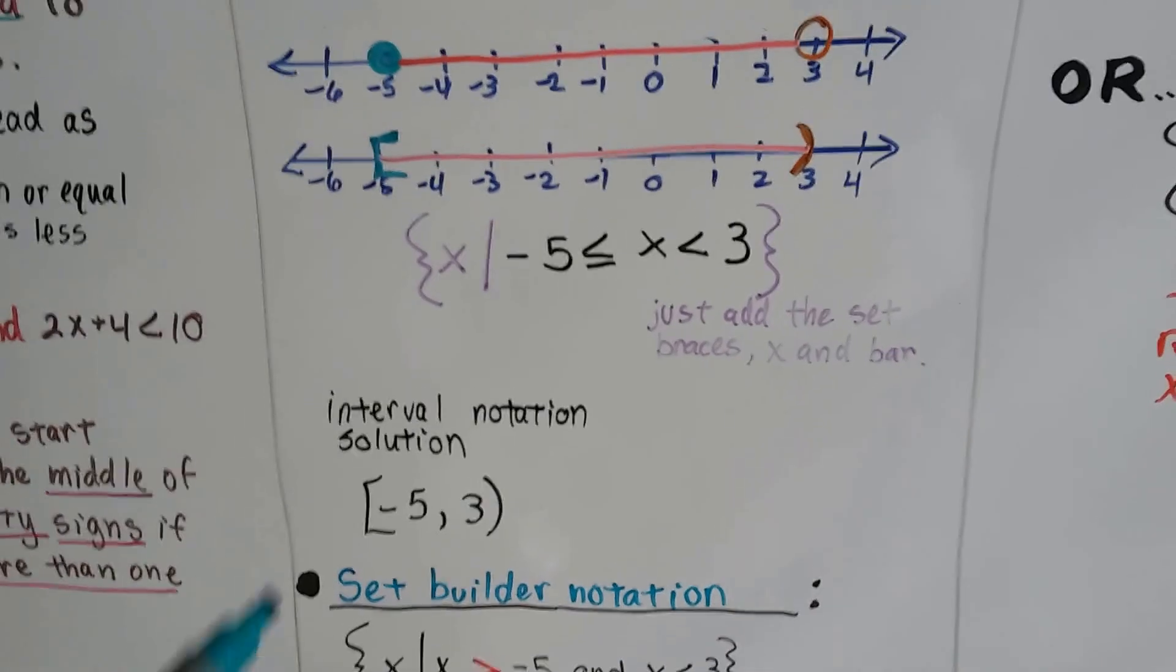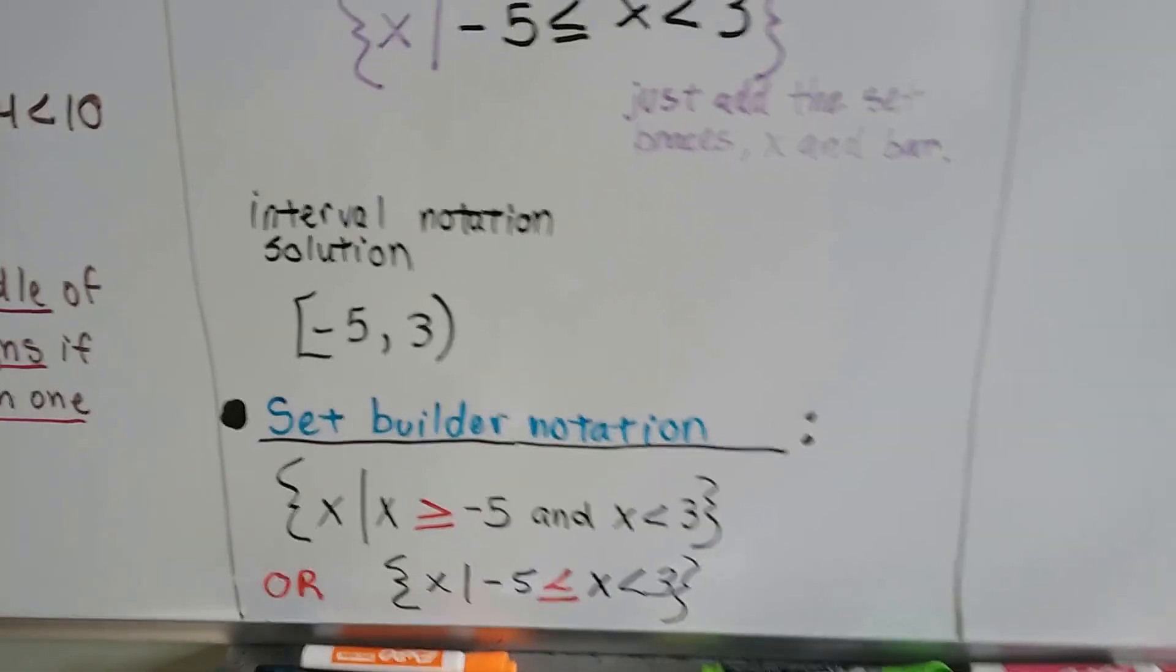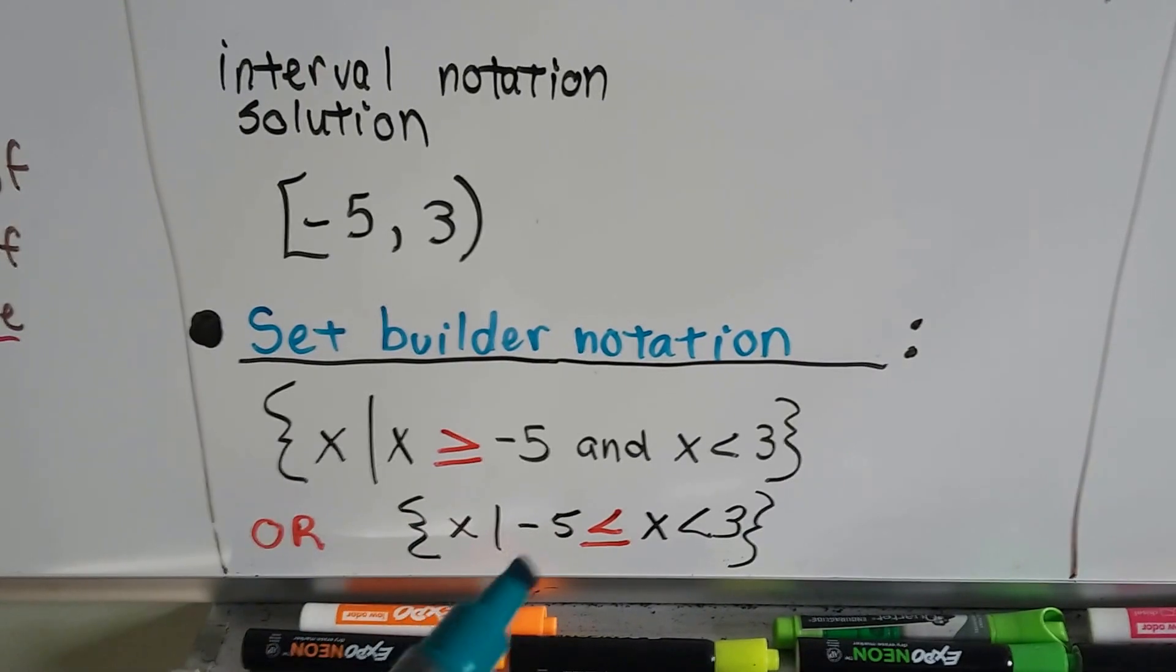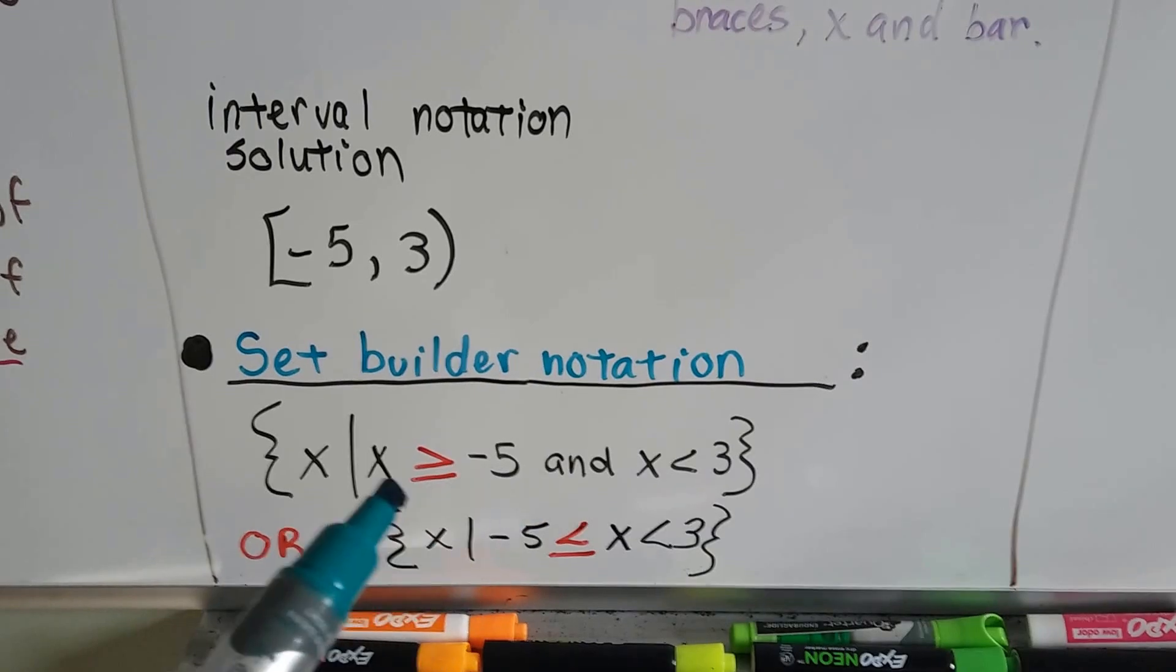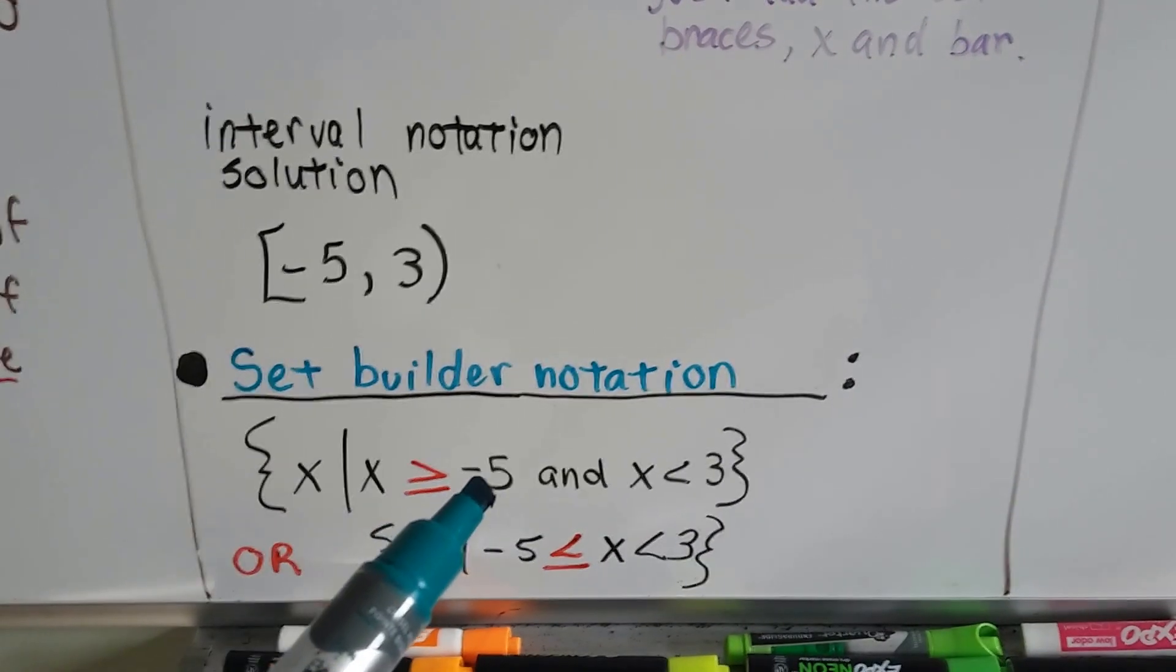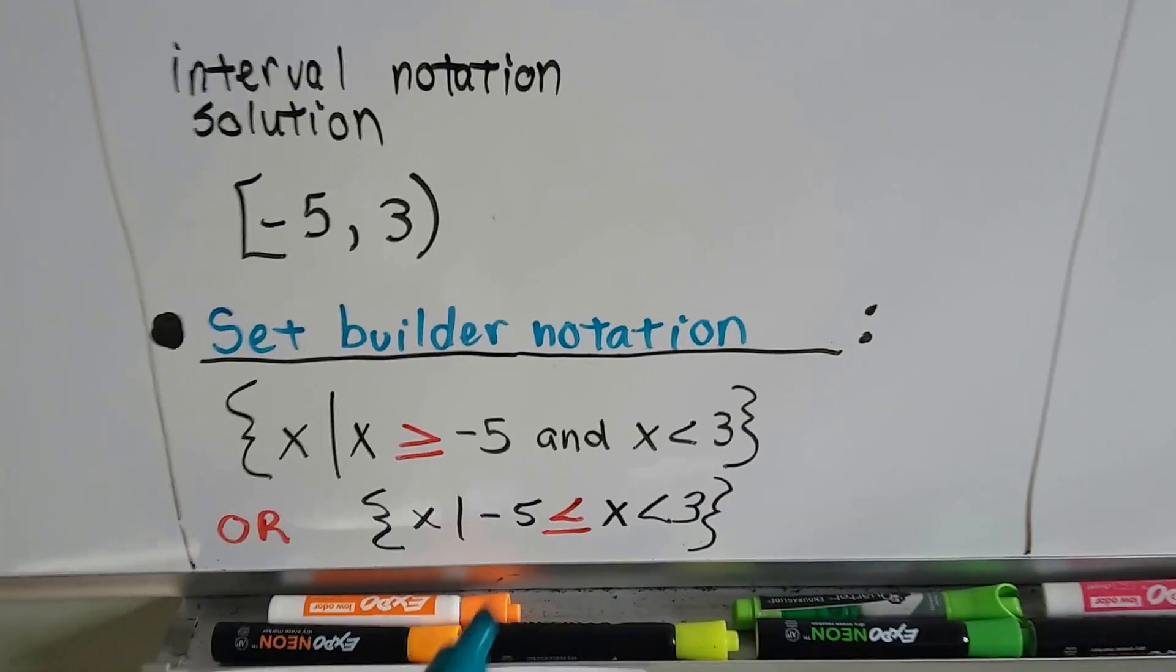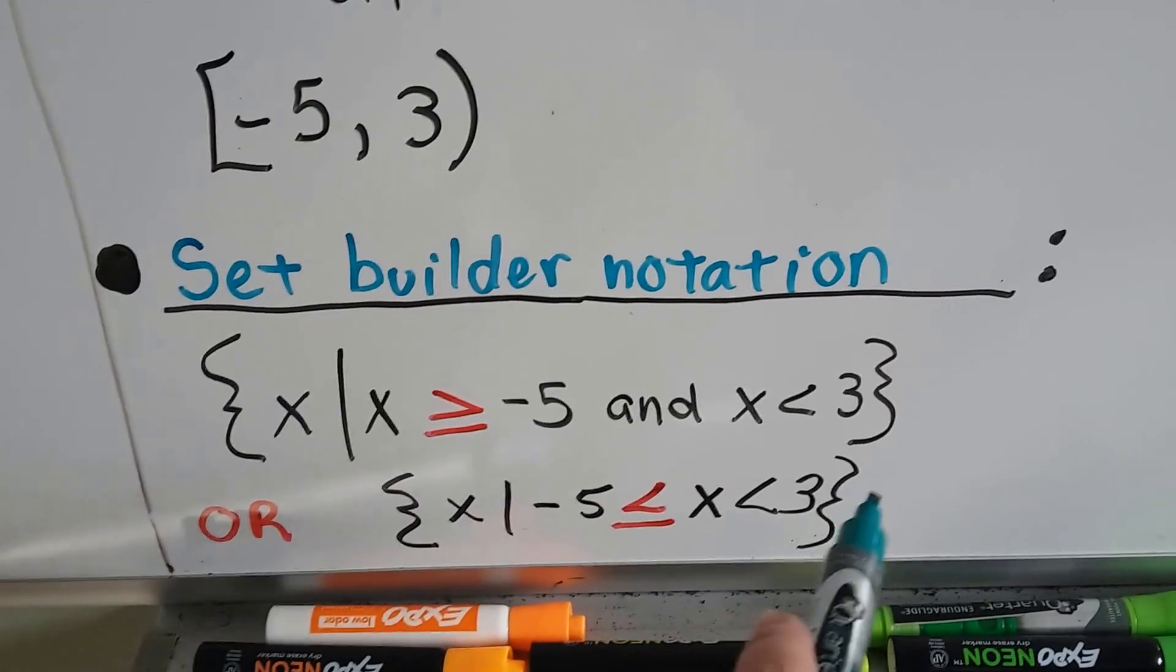In interval notation, we would write the bracket and the negative 5 and then a comma and then the 3 with the parentheses. Now we can also write it in set builder notation with the x in the center. We could also do it with the word and in it and do the set of all x such that x is greater than or equal to negative 5 and x is less than 3. But by doing it this way, all we had to do was add this such that bar, the x and the set braces.